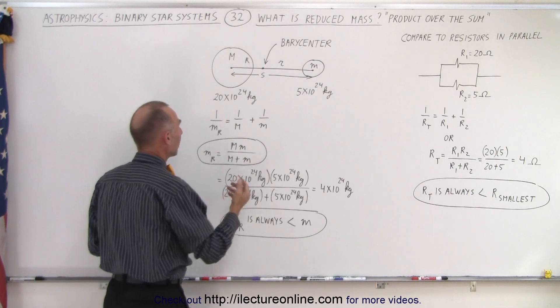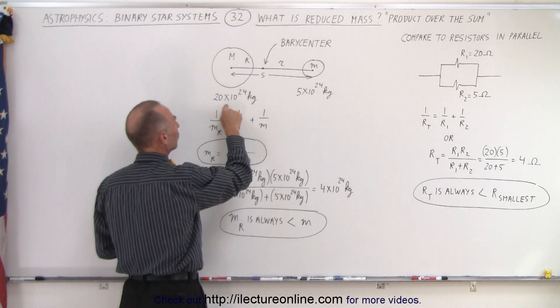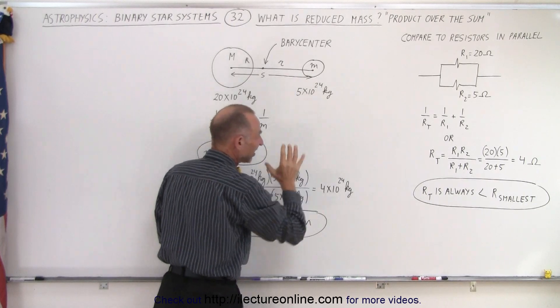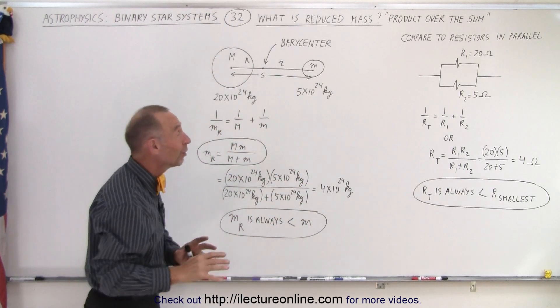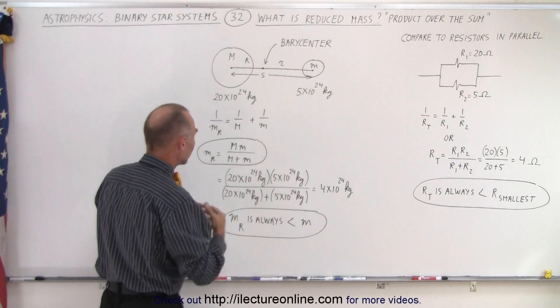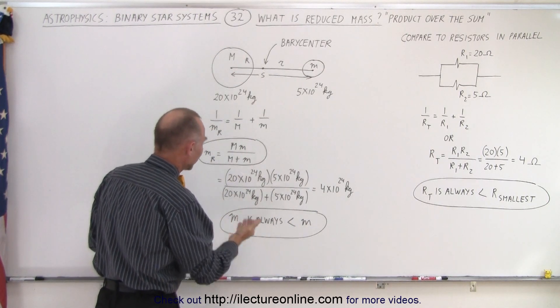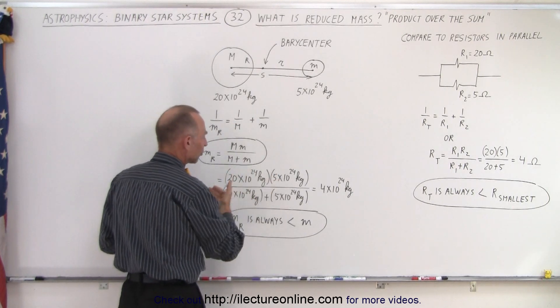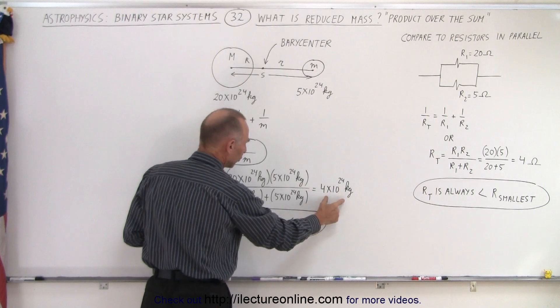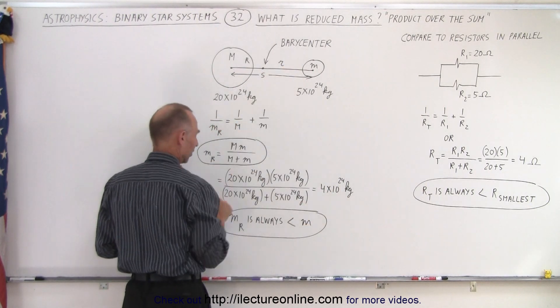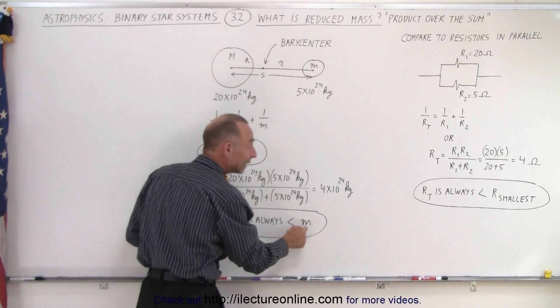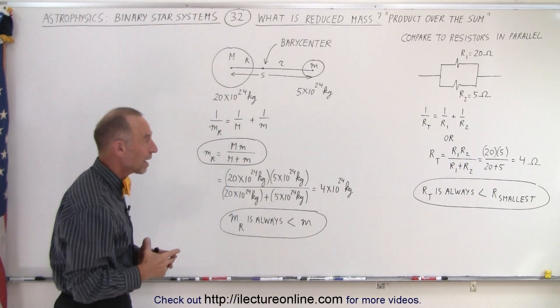So again we use the example where the large mass is 20 times 10 to the 24 kilogram. The small mass is 5 times 10 to the 24 kilogram. Those masses are actually a little bit small for stars but it doesn't matter. It doesn't matter what the units are what the values are. But if we calculate it notice we get the same result. We get the result of 4 times 10 to the 24 kilograms which of course is less than the small mass because reduced mass is always going to be smaller than the smallest of the two masses.